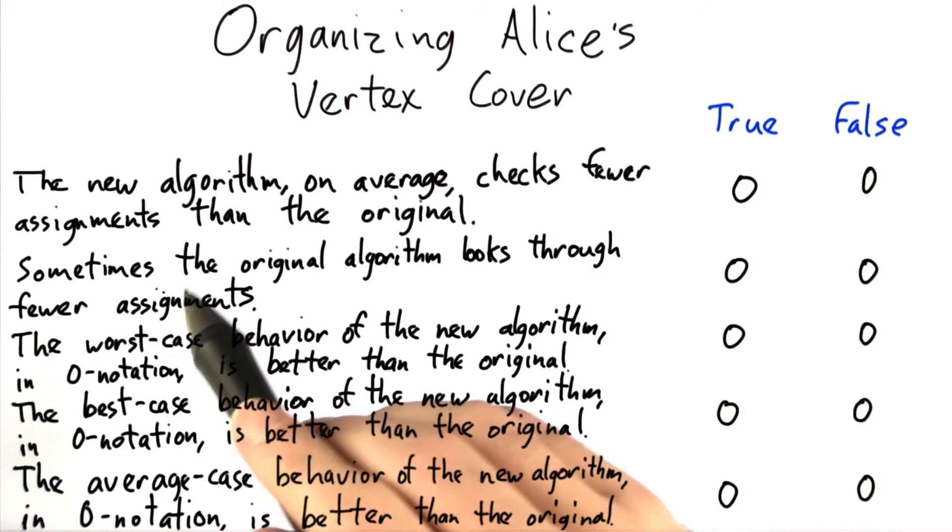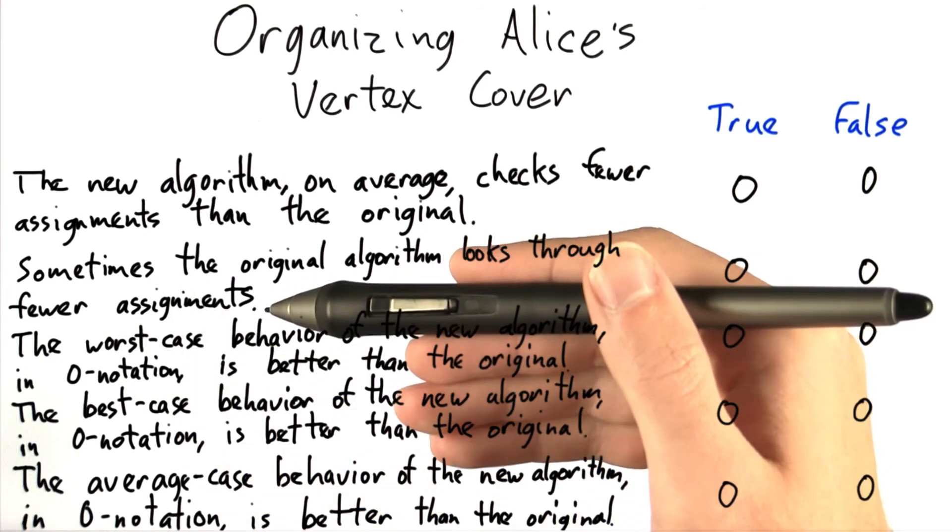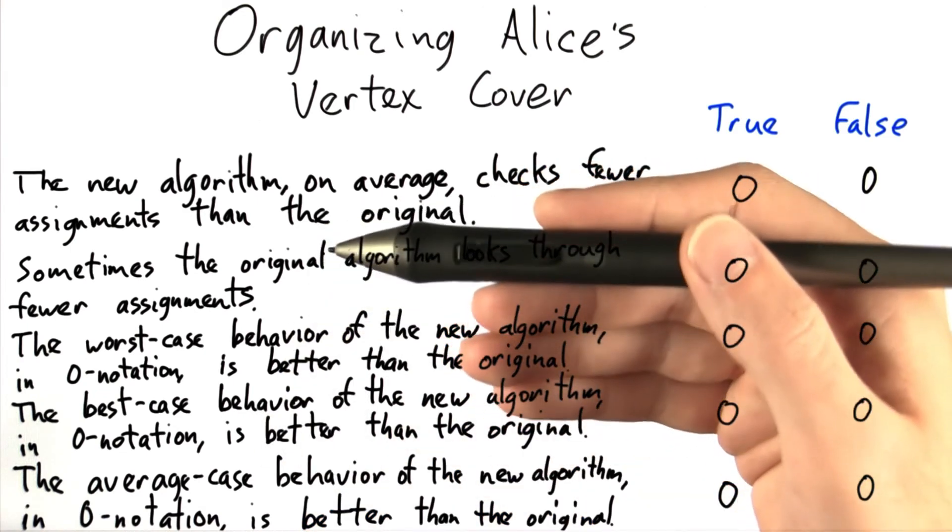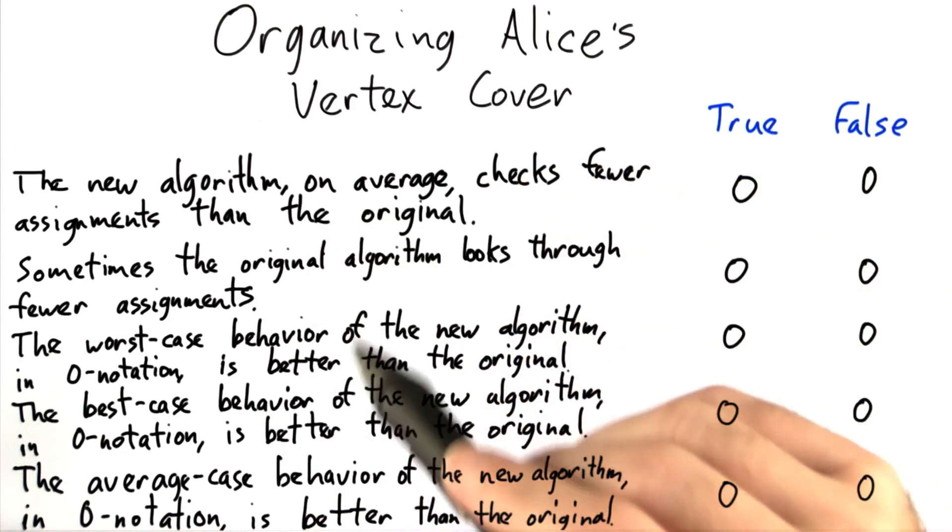Second, does the original algorithm sometimes look through fewer assignments? And by that I mean, does it look through fewer assignments than the original algorithm at least once?